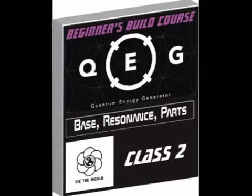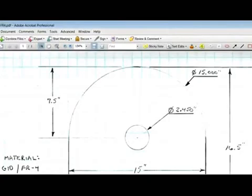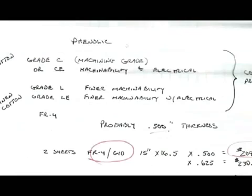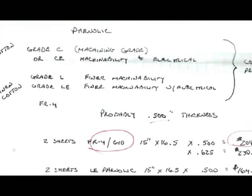For a limited time, when you purchase the 5th Edition of the QEG Free Energy Generator Build Manual, you will receive Class 2 from the QEG Beginners Build Course 2015: Base Resonance Parts — an 86-minute video of James describing parts needed for completion of the QEG Generator Core, a presentation and description of core mechanical part drawings and specifications, a preliminary discussion of platform construction and options with drawings, explanation of power generation by means of parametric resonance, and answers to previously submitted email questions from class members.